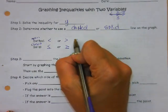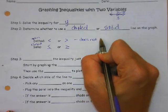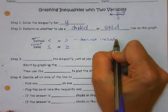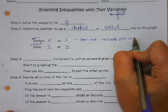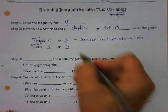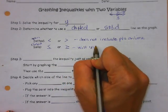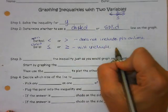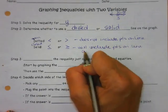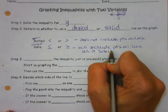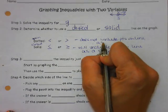Remember, dotted does not include the points on the line, whereas solid will include the points on the line as a solution. These do not include the points on the line as a solution.